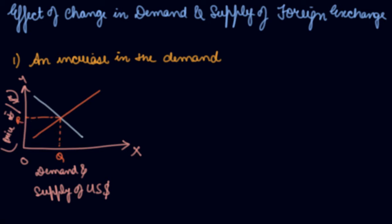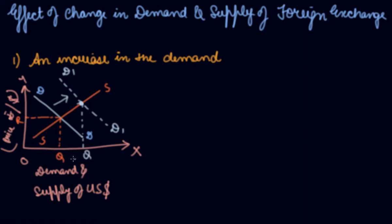Now let's suppose the demand of your US dollar increased. This was your DD curve and this is your supply curve. If the demand of your US dollar increases, the demand curve has shifted rightwards — this is an increase in demand. The new equilibrium is restored here where demand equals supply.